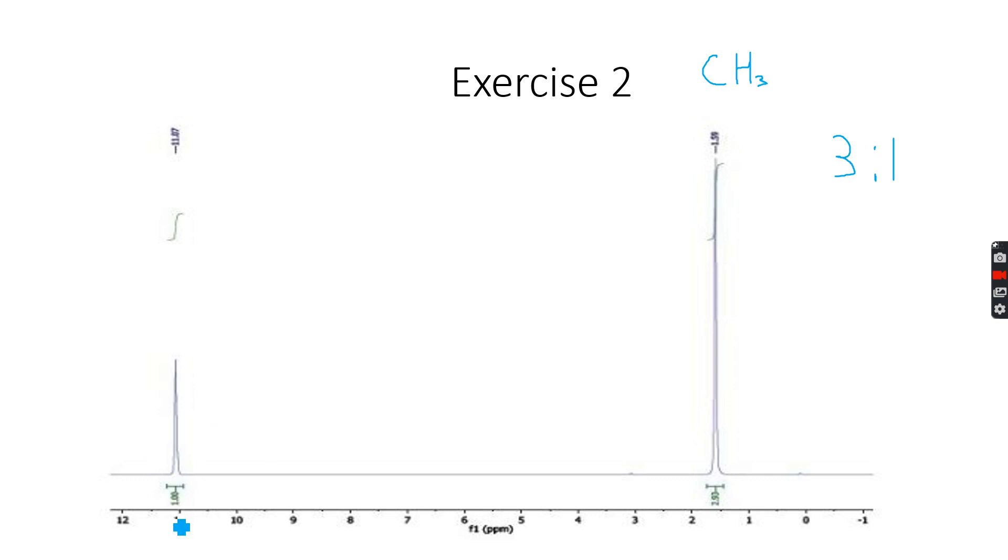Now let's go here. I see a singlet peak and I also see a chemical shift of 11. Now I go to my data booklet, and when I look at my data booklet, I see that this is in the range for carboxylic acid because the range for carboxylic acid is 9.0 to 13.0.